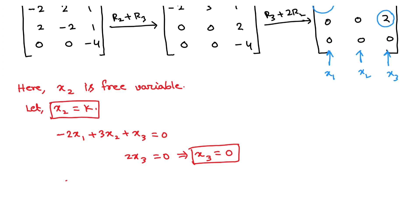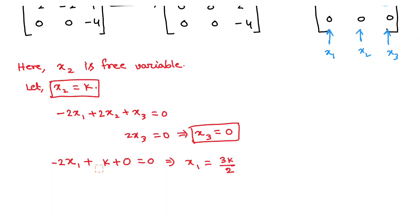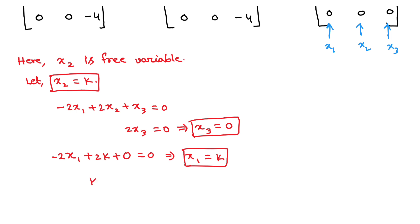With x2 = k and x3 = 0, from the first equation -2x1 + 3k + 0 = 0. Correcting an earlier mistake — the coefficient is 2, not 1 — we get x1 = k. So the solutions are x1 = k, x2 = k, x3 = 0. Writing this as k times [1, 1, 0], the eigenvector for λ = 5 is [1, 1, 0].